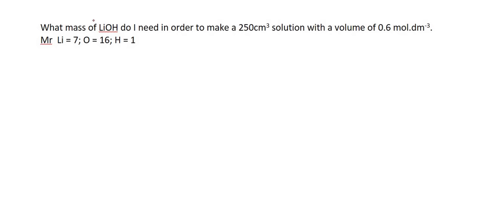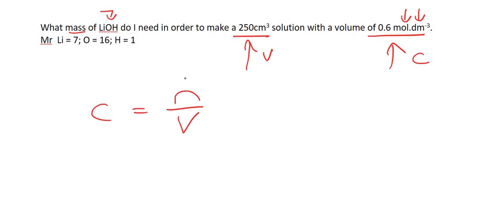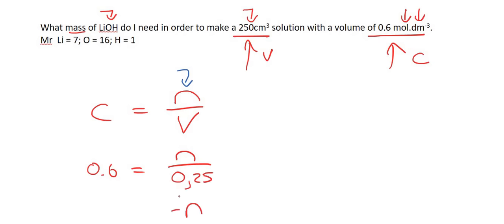Here's another one. What mass of lithium hydroxide do I need to make a solution with a given volume and concentration? Whenever you see mol·dm⁻³, that is a concentration. They've given us V and C. Using C = n/V, we work backwards to find moles: concentration is 0.6, volume is 250 cm³ ÷ 1000 = 0.25 dm³. So n = 0.6 × 0.25 = 0.15 moles.